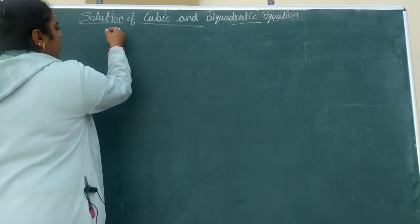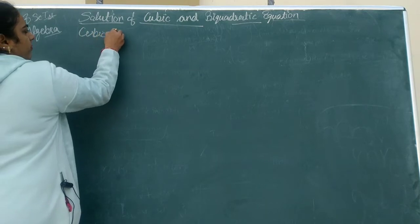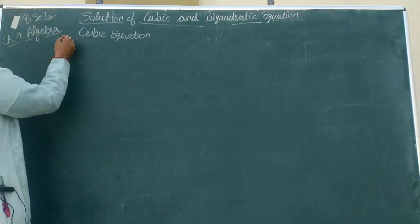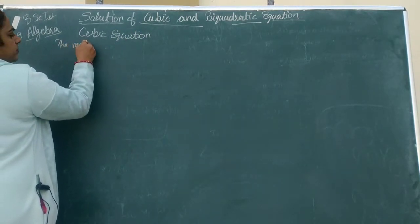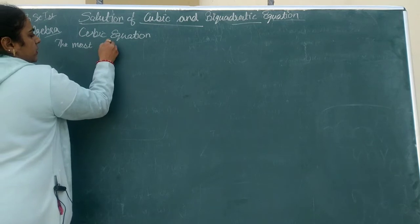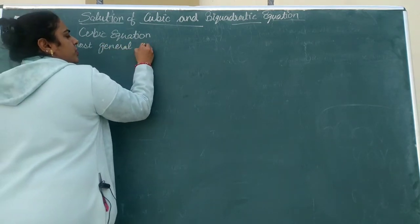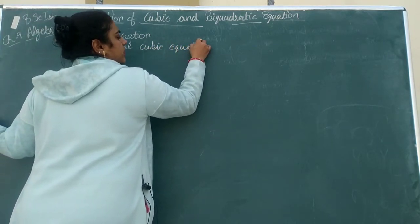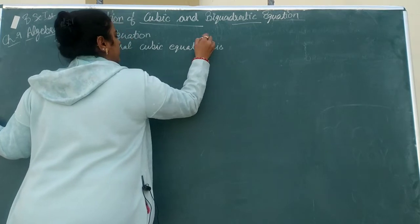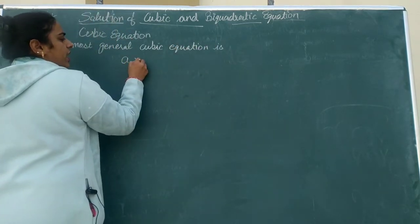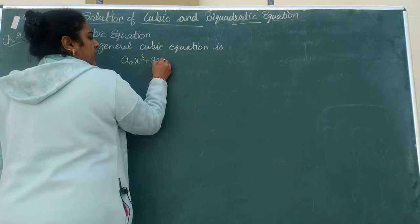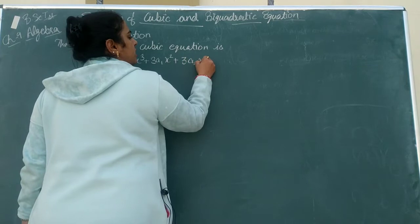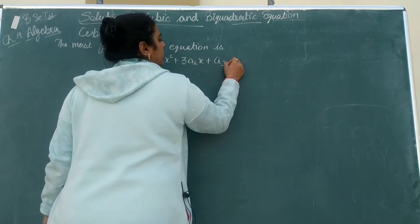Today I will discuss only cubic equations. The most general cubic equation is: a₀x³ + 3a₁x² + 3a₂x + a₃ = 0.